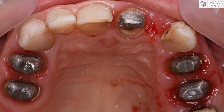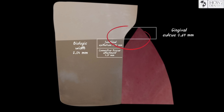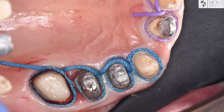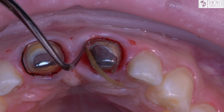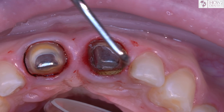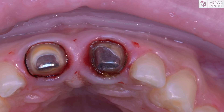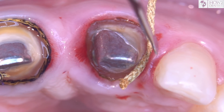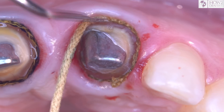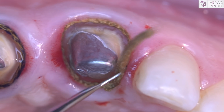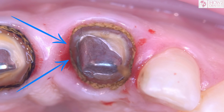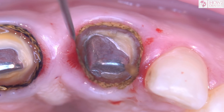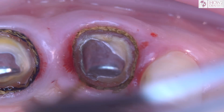In cases where subgingival preparation has already violated the epithelial attachment, it is often necessary to perform retraction with two cords. First, we set the first cord — often with impregnation and the smallest diameter sufficient for holding — and in this case the thread can be completely impressed into the sulcus. Then the second cord is set. The second cord provides horizontal retraction and for this it should be visible on the entire perimeter. If the size is not selected correctly, or the cord is packed too tightly and deep, the gum will collapse above the cord and will not provide proper horizontal retraction. In this case it can be pulled back a little or a larger cord diameter can be selected.